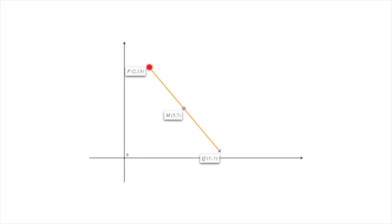We have the coordinates of one of the endpoints, in this case P with coordinates 2, 13. We also have the coordinates of the midpoint, in this case M with coordinates 5, 7. And we need to find the coordinates of the other endpoint, Q.